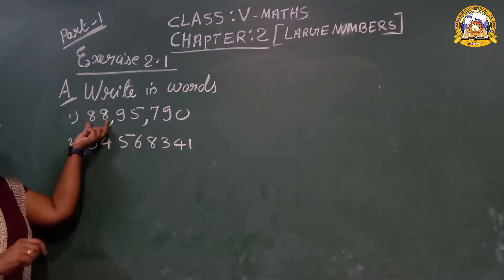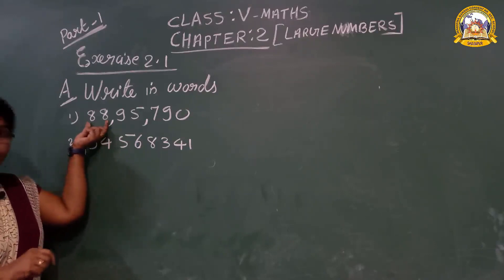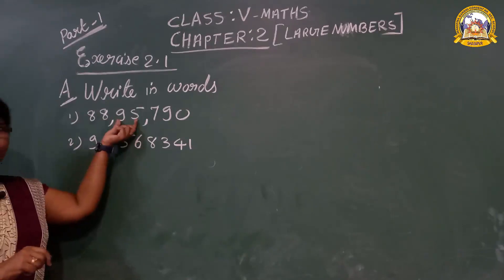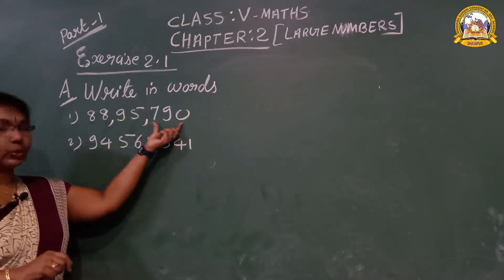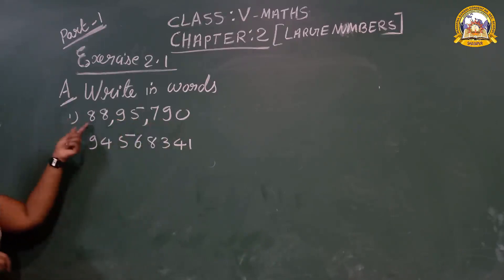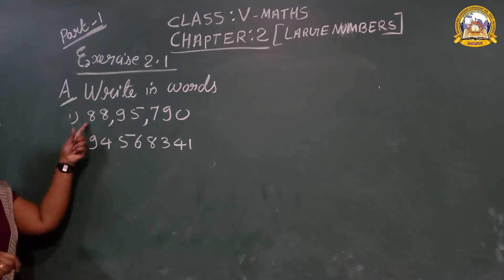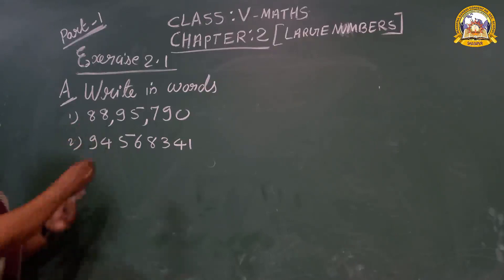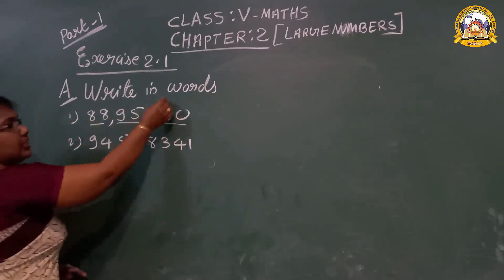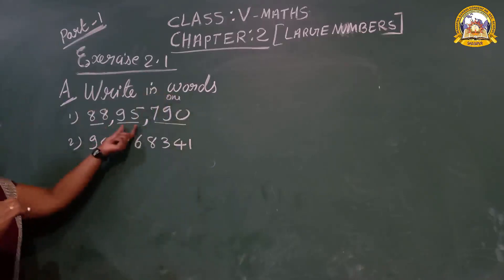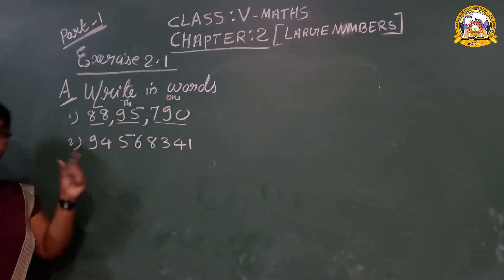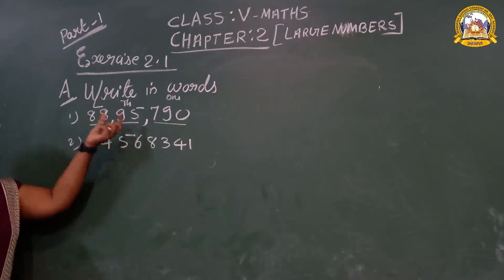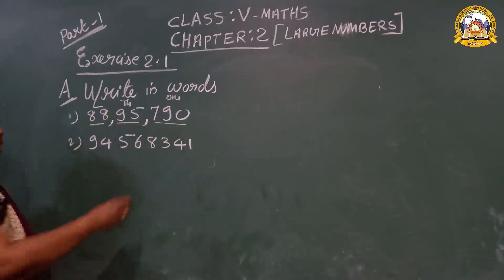Eighty-eight crore? No. Then say eighty-eight lakhs. Then ninety-five thousands. This is in the lakhs period. Then read together the ones period: seven hundred ninety. So: eighty-eight lakhs, ninety-five thousand, seven hundred ninety. Don't get confused while writing.